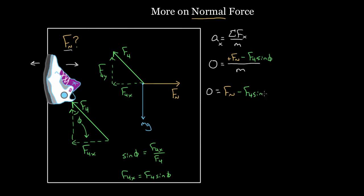I've got Fn minus F4 sine phi. Now when I solve this for Fn, the normal force, I'll get the Fn, I'll add this F4 sine phi to both sides and I'll get that this normal force is gonna equal F4 sine phi. And that makes sense.